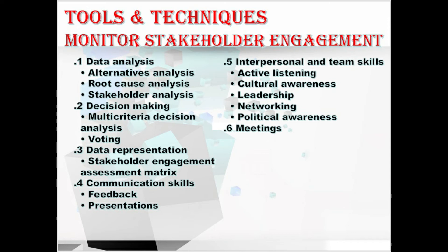Let's move to tools and techniques. First, we have the data analysis technique, which contains alternative analysis, root cause analysis, and stakeholder analysis. Alternative analysis is used to evaluate the options to respond to variances in the desired results of stakeholder engagement. Root cause analysis (RCA) is used to determine the basic underlying reason that stakeholder engagement is not having the planned effect. Stakeholder analysis helps determine the position of stakeholder groups and individuals at any particular time in the project.